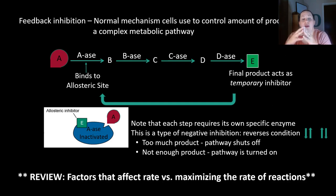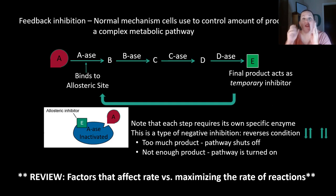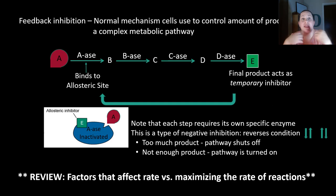Quick review of factors that affect the rate of enzyme reactions: temperature, pH, substrate concentration, and inhibitors. These are all things that can ultimately affect the rate of an enzyme and how it works.